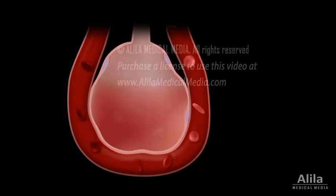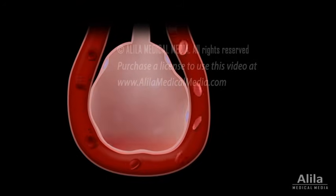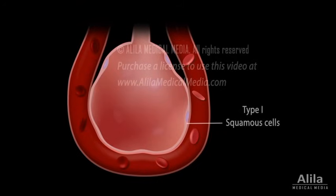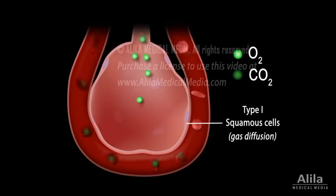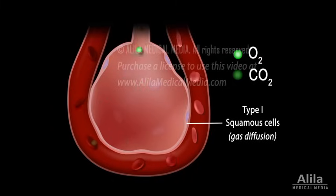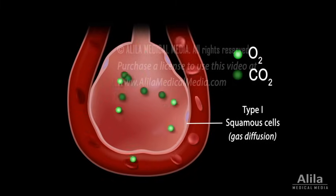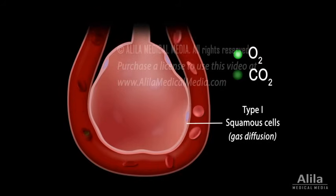This is where the gas exchange process takes place. The alveolar wall is composed mainly of type 1 thin squamous cells, which allow rapid gas diffusion. Inhaled oxygen moves from the alveoli into the blood in the capillaries, while carbon dioxide relocates from the blood to the alveoli to be exhaled out of the body.